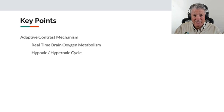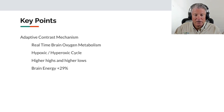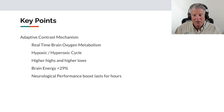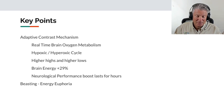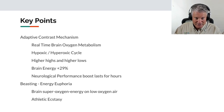Key points: number one, the critical adaptive contrast mechanism shows real-time brain oxygen metabolism, displaying hypoxic and hyperoxic episodes during the workout. We watch for higher highs and higher lows, meaning the whole picture of brain oxygen use goes up through the workout. By the end, you'll see a steady-state increase in brain energy production of about 29 percent. The neurological performance boost lasts for hours. We also narrate what happens during 'beasting' — an energetic euphoria where the brain is super-oxygenated even on low-oxygen air, which I describe as athletic ecstasy.